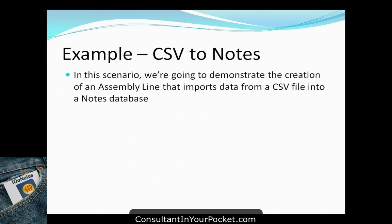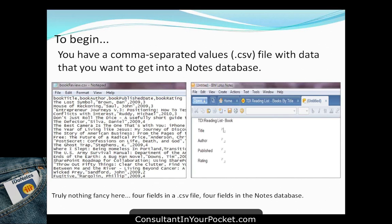In the first scenario, we're going to take a CSV file and move it into Notes. The reason you'd use TDI over a straight import or an agent is that TDI can be triggered by the appearance of a file in an FTP directory, or scheduled to run every hour. TDI can run these things automatically in a controlled server environment, and you can set up new jobs without coding additional backend agents.